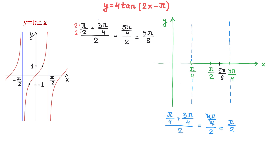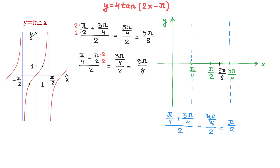Now, to find the coordinate of the other point, we will add pi over 4 and pi over 2 and divide the result by 2. We multiply the numerator and denominator of the second fraction by 2. Then pi over 4 plus 2 pi over 4 makes 3 pi over 4, and 3 pi over 4 divided by 2 is 3 pi over 8. So this point on the x-axis has the coordinate 3 pi over 8. At pi over 2 we have an x-intercept, at 5 pi over 8 we will move up 4 units, and at 3 pi over 8 we will move down 4 units. We can check all this work using a calculator.